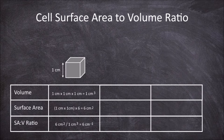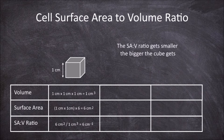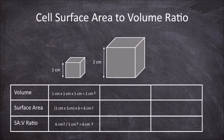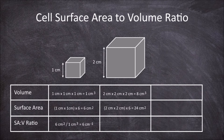The surface area to volume ratio gets smaller the bigger the cube gets. If the cube had a side length of 2cm, the volume would be 2cm × 2cm × 2cm = 8cm³. The surface area would be 2cm × 2cm × 6 sides = 24cm². So the surface area to volume ratio would be 24cm² ÷ 8cm³ = 3cm⁻¹, which is smaller than for the smaller cube.